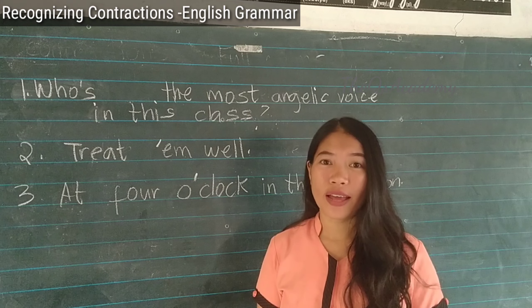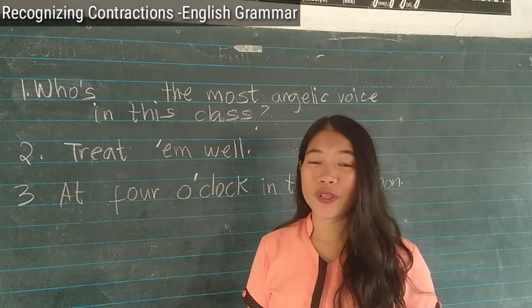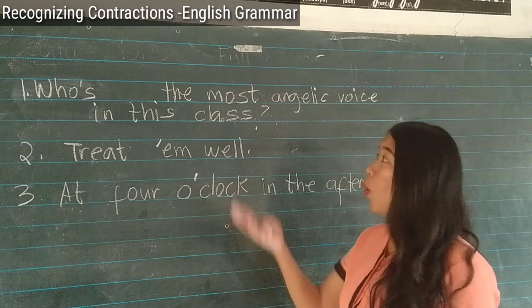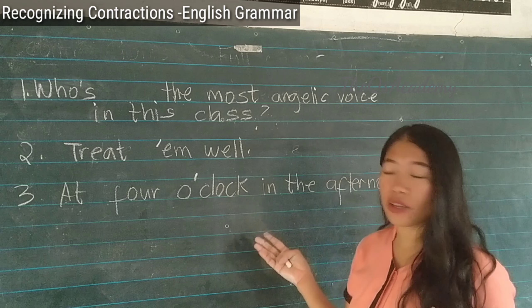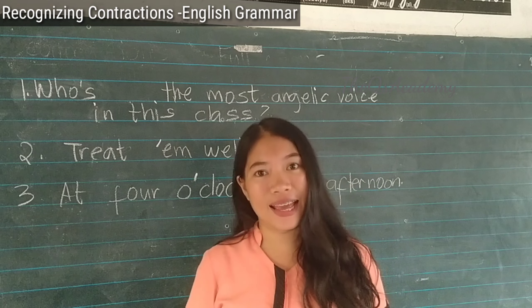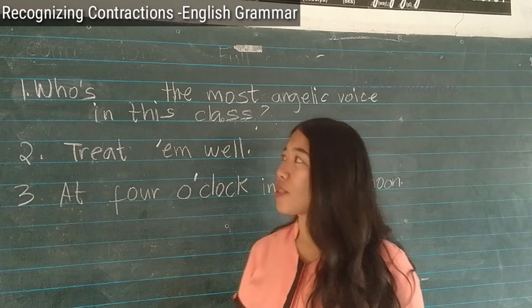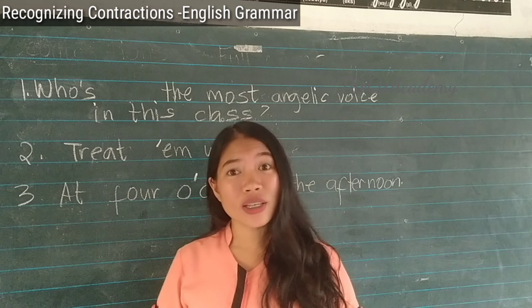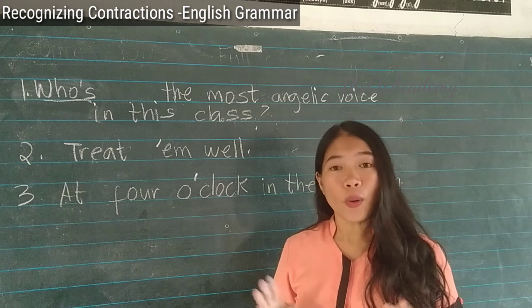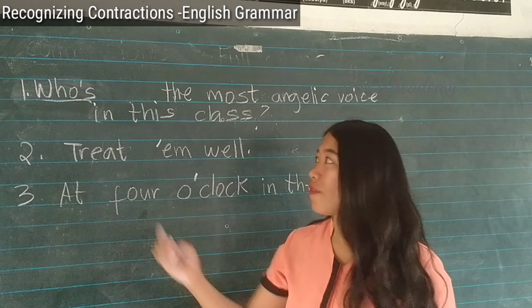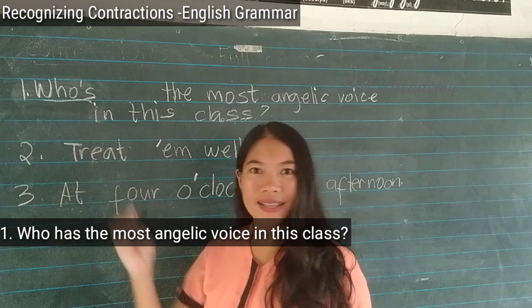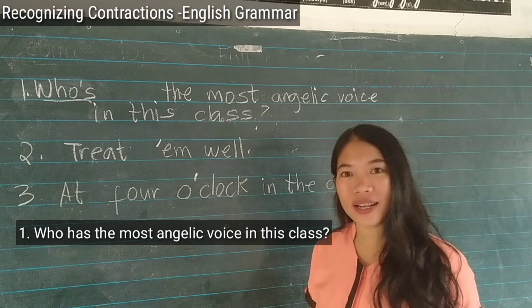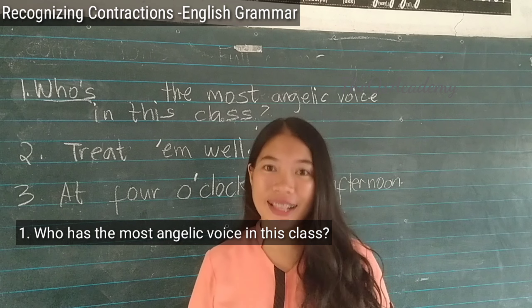Now let us try to identify the contracted words in the following sentences. Number one: 'Who's the most angelic voice in this class?' The contracted word is 'who's', and the full form of this contracted word is 'who has' — 'Who has the most angelic voice in this class?'